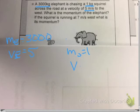So the velocity of the elephant is going to be 5 meters per second. Does it give us anything else? That's it for the elephant's momentum. But for the second part, we need to know that the squirrel is moving 7 meters per second west.